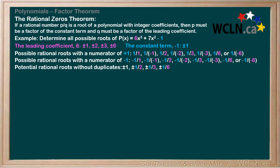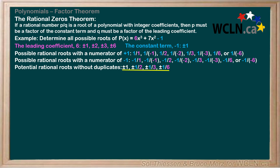In the future, we can take the absolute values of the factors of the leading coefficient and constant term, generate only the positive potential rational roots, and then add plus or minus to each to get all potential rational roots. This is all the example asked us to do — we found all the possible roots of p of x. However, from here we could begin our four-step process to factor this polynomial. The actual roots of this polynomial are negative 1, negative 1 half, and positive 1 third.